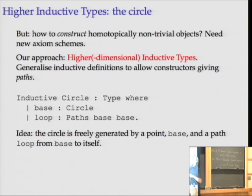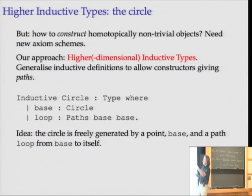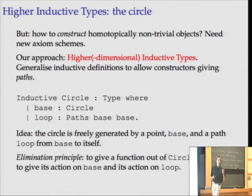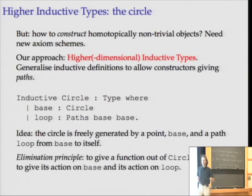Say we want to think of the circle as a type freely generated by: a base point, and then a path from that point to itself. Since we can already talk about paths, this is something we can specify, and with a bit of thought we can write down the elimination principle. Informally it's very analogous to ordinary inductive types: to give a function out of the circle, it's enough to define what it does to the base point and what it does to the loop — it should take the base point to a point, and the loop to a path from that point to itself. This gives us a candidate type we might call the circle.